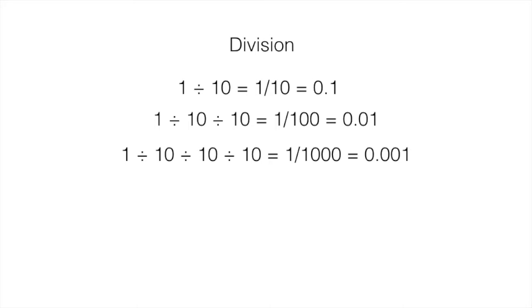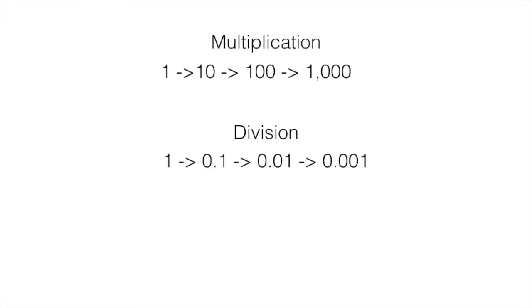10 pieces for tenths, 100 pieces for hundredths, 1,000 pieces for thousandths. Do you see how multiplying or dividing by one more 10 changed the place value of the 1 each time — moving it to the left when we multiplied, and to the right when we divided? Also, look at the pattern of the zeros. The number of zeros in our answer is always the same as the number of zeros in our problem, or how many tens we used to either multiply or divide.